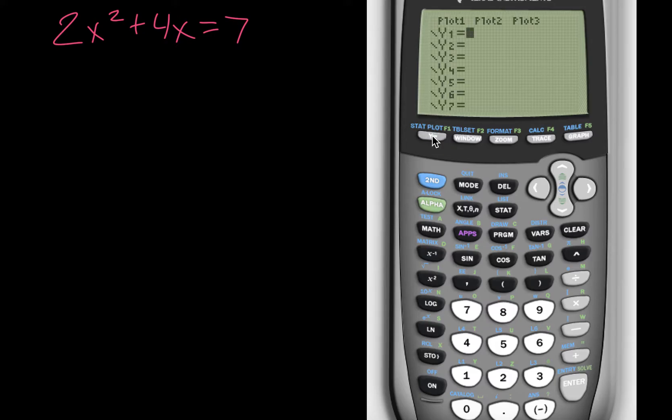So the first thing is, you have this y equals button right here, and then you type in your equation. So this button right here, the x, t, theta, n, that's how you type in an x, and then we have this carat button to get an exponent, and then the rest I think is self-explanatory. Now, I'm just going to type in each side of the equation as a separate equation on here. So notice how I have 2x squared plus 4x, and then I have just 7.